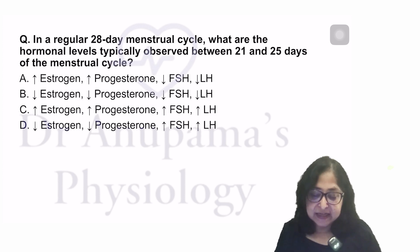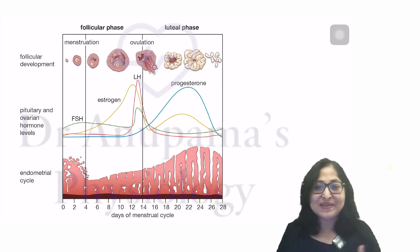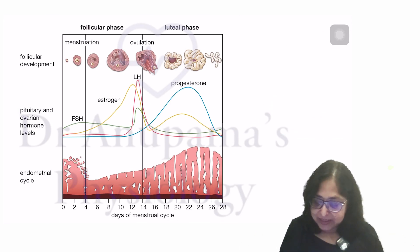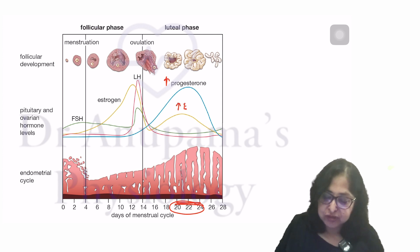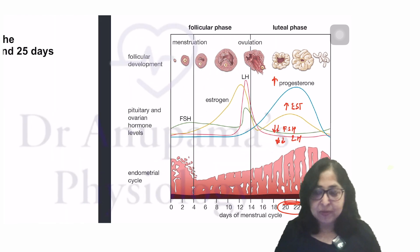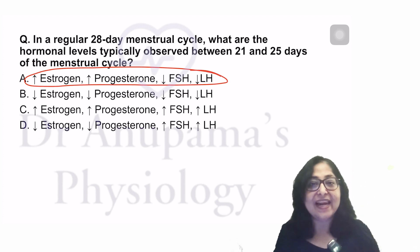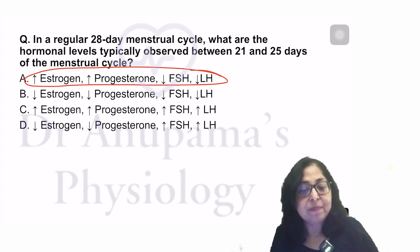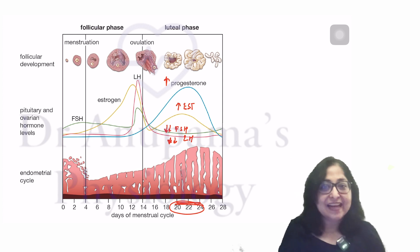In a regular 28-day menstrual cycle, what hormonal levels are typically observed between days 21 and 25? Looking at this well-known diagram, between days 21 and 25, there is high progesterone and high estrogen, but very low FSH and LH. The estrogen and progesterone come from the corpus luteum, which exerts a negative feedback effect reducing FSH and LH levels.